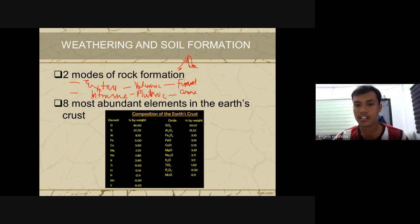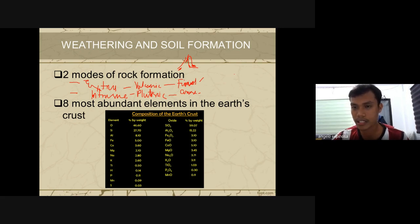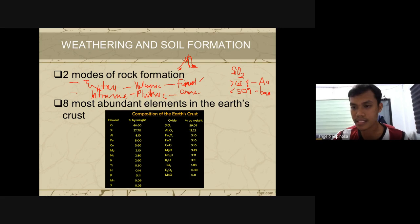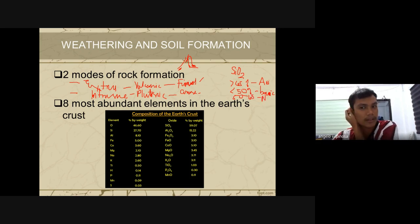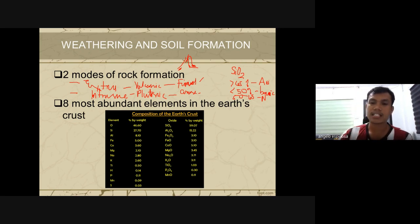Regarding silicon oxide composition: if silicon oxide is greater than 65%, the rock is acidic. If silicon oxide is less than 50%, it is basic. If silicon oxide is between 50% and 65%, that is neutral. Remember these three ranges for the board exam.